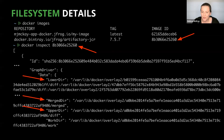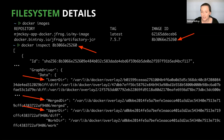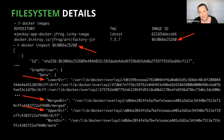The lower dir, merge dir, and upper dir sections are especially important. The lower dir contains all of the directories or layers that were used to build the original image — these are all read-only. The upper dir contains all of the content that has been modified while the container is running. If modifications are needed for a read-only layer in lower dir, that layer is copied into upper dir where it can be written to — this is called a copy-on-write operation. It's important to remember that the data in upper dir is ephemeral data that only lives as long as the container lives. If you have data you intend to keep, you should utilize the volume features of Docker and mount a location that will stick around even after the container dies.